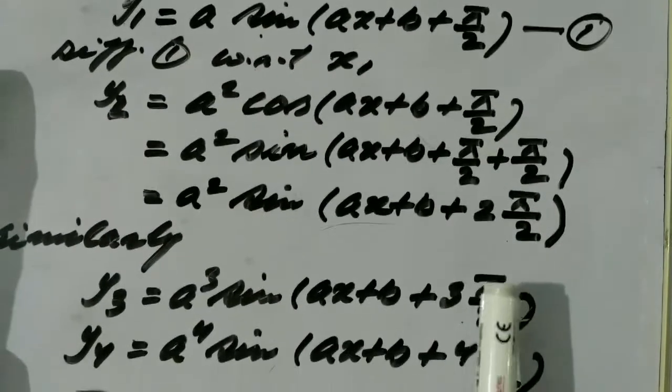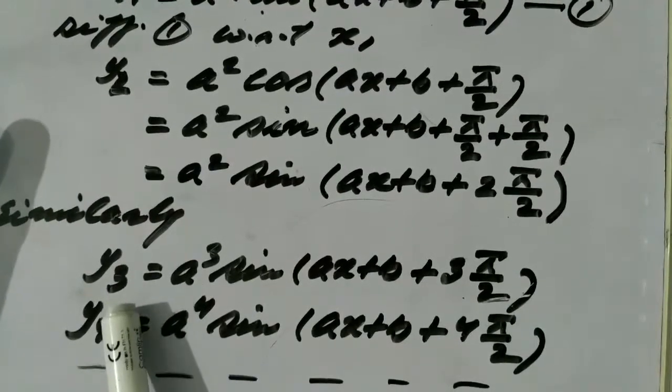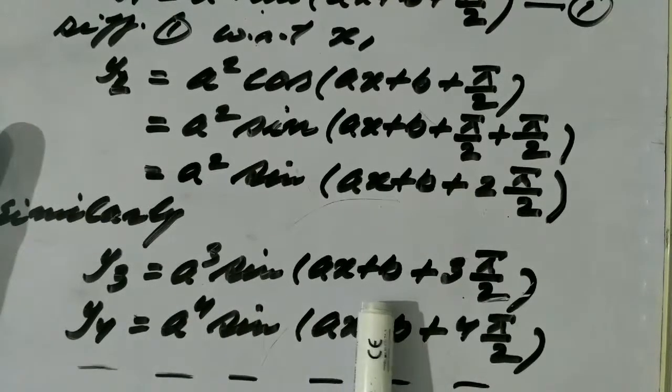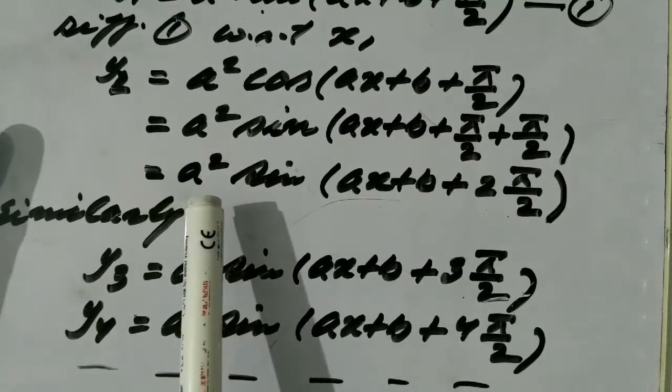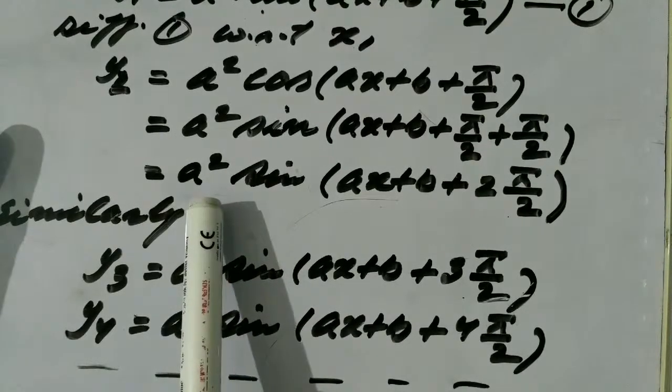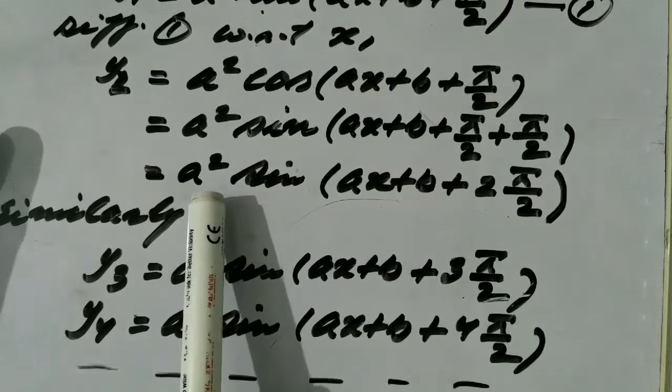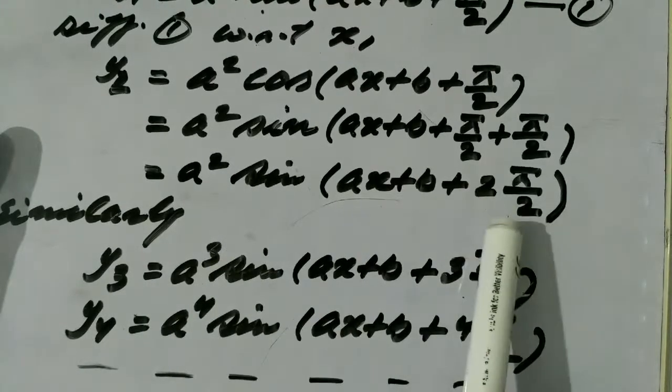Similarly, y3, the next derivative, y3 equals a cubed sin(ax+b+3π/2), as we have observed every time we differentiate the function, one exponent is added to a and one π/2 is added to the angle.